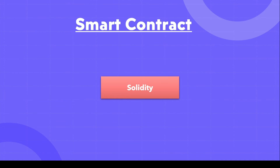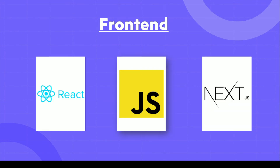For smart contracts, I suggest going for the Solidity programming language. There are other options like Vyper, but Solidity is the most famous and the most in-demand language for smart contract development. That said, it's your choice — if you prefer another programming language for smart contracts or for front end, you can go for it depending on which blockchain you're targeting.